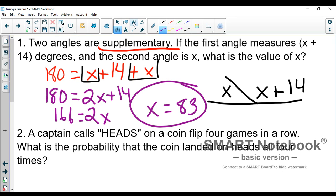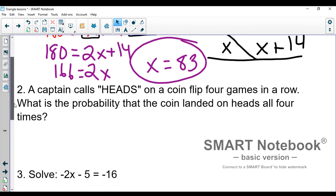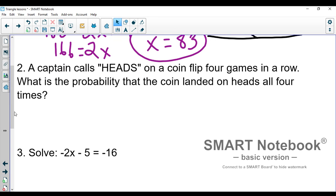Number two, a captain calls heads on a coin flip four games in a row. What is the probability that the coin landed on heads all four times? Well, this seems like it might be pretty simple to do because we're just talking about a one out of two chance. But we're looking for four heads in a row. So the first time the captain goes out to the coin flip, he or she has a one out of two chance of getting heads.